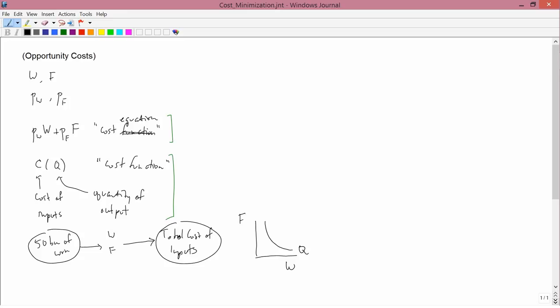That's not easy, because in general, there's a whole isoquant that represents, let's say, 50 bushels of corn. And so there are an infinite number of different ways of buying water and fertilizer to produce corn. So you don't know which WF combination the farmer is going to use. And so you don't know what the W and F are. So it's really hard to get from 50 bushels of corn to the total cost of inputs.